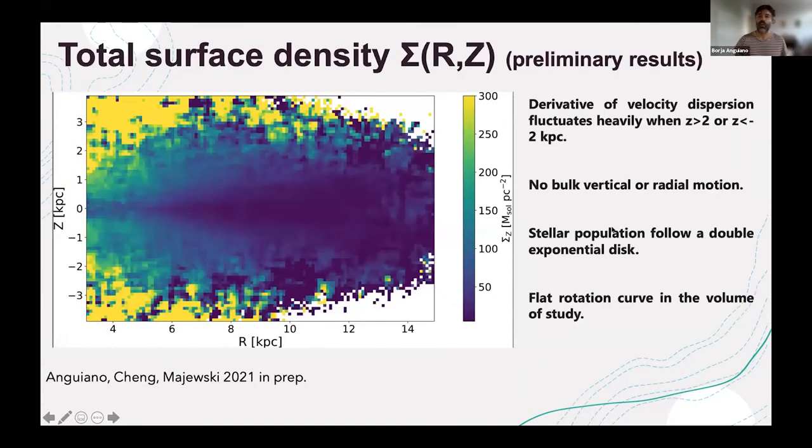This is a very preliminary result of all this. Here you have the vertical height versus galactocentric radius, color coded by the total surface density. All this is very preliminary, but we maybe see some clumpiness here that is telling us about how clumpy the dark matter is in the halo.